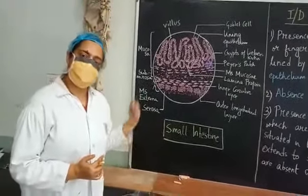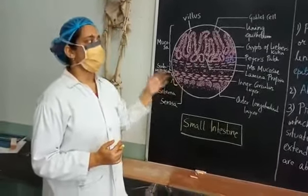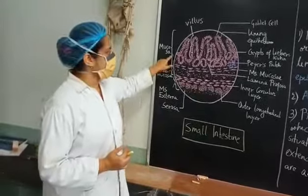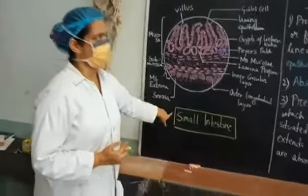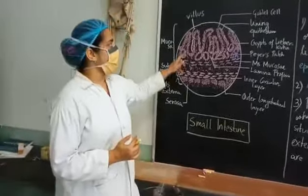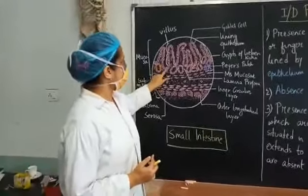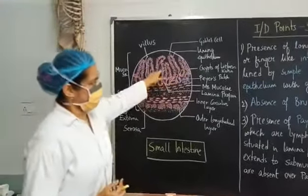You can write the identified points of the duodenum plus these specialized points. Here in the case of small intestine you will find presence of long club-shaped or finger-like intestinal villi. This is the villi.